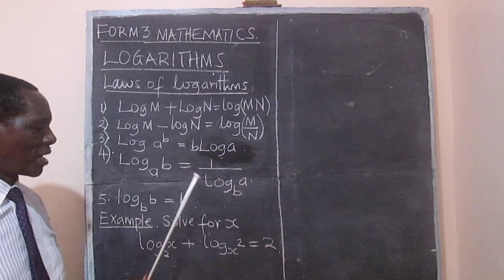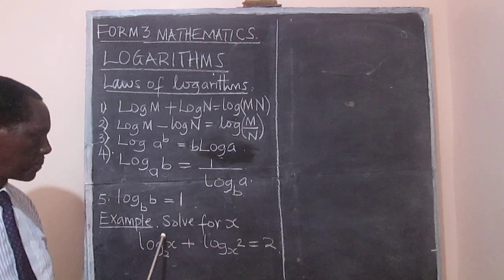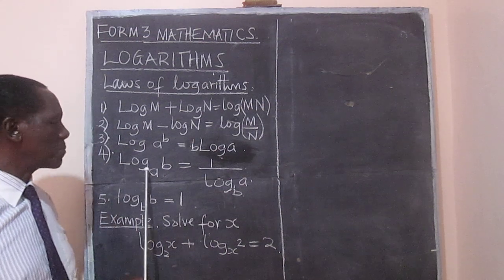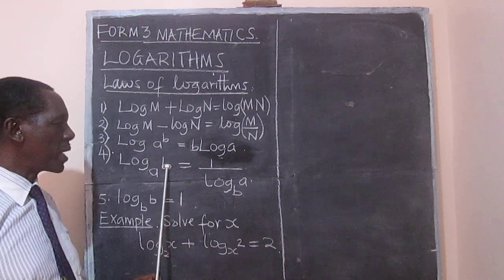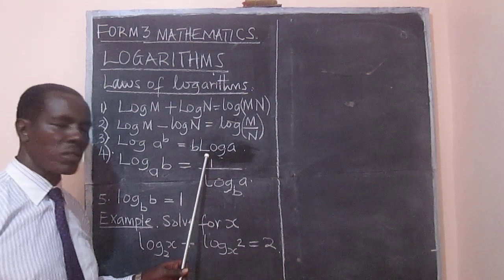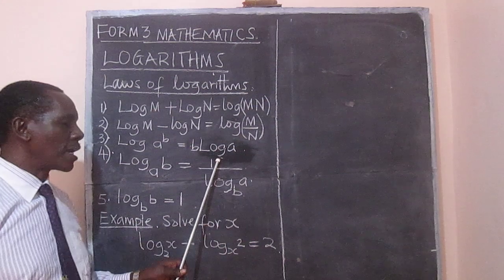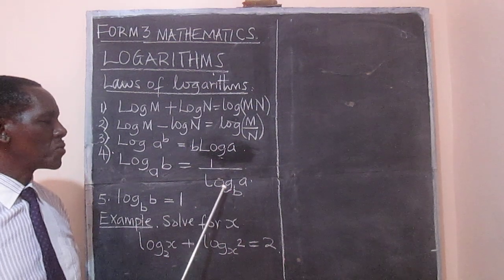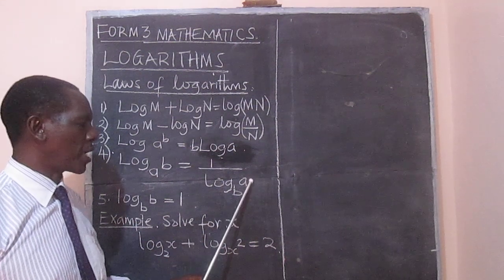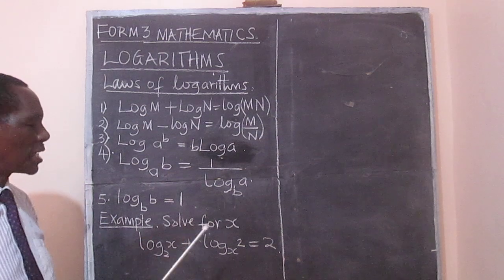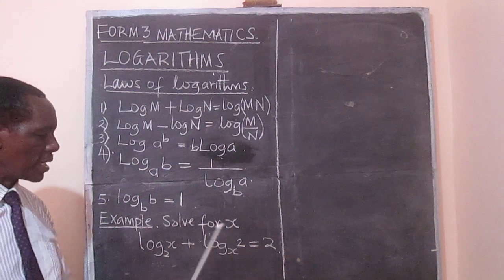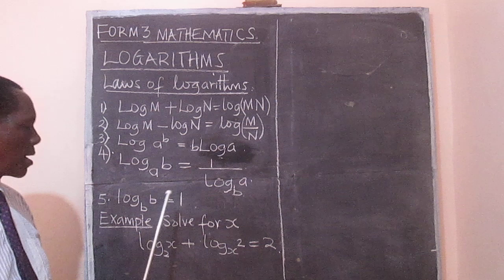The other important one, and which we are going to apply down here, is that the logarithm to base a of b is always equal to 1 over the logarithm to base b of a. Very important, and we are going to apply that in this example here.